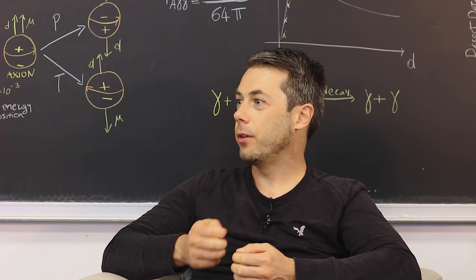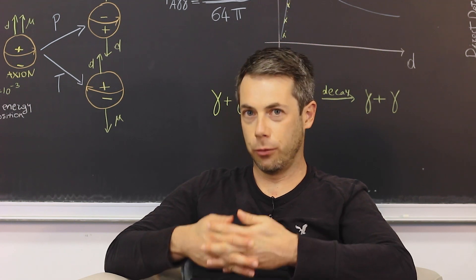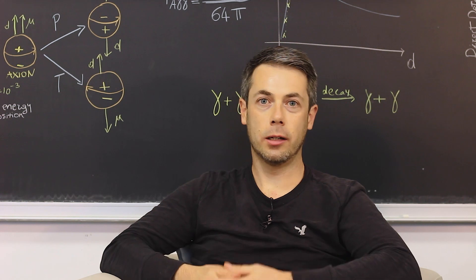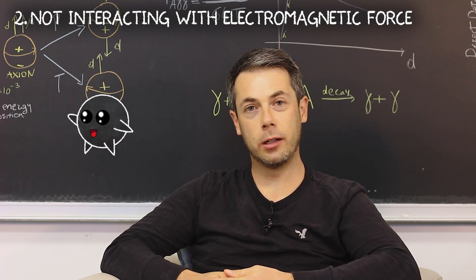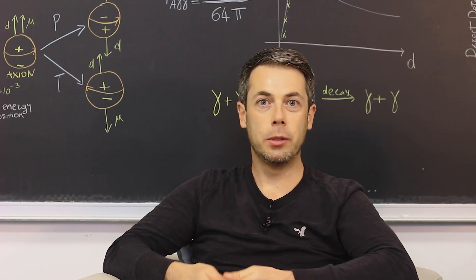Secondly, we have never seen light originating from dark matter. For us physicists, this means that dark matter is not interacting with a photon, the carrier of the electromagnetic force. And as a consequence, dark matter cannot be electrically charged. And finally,